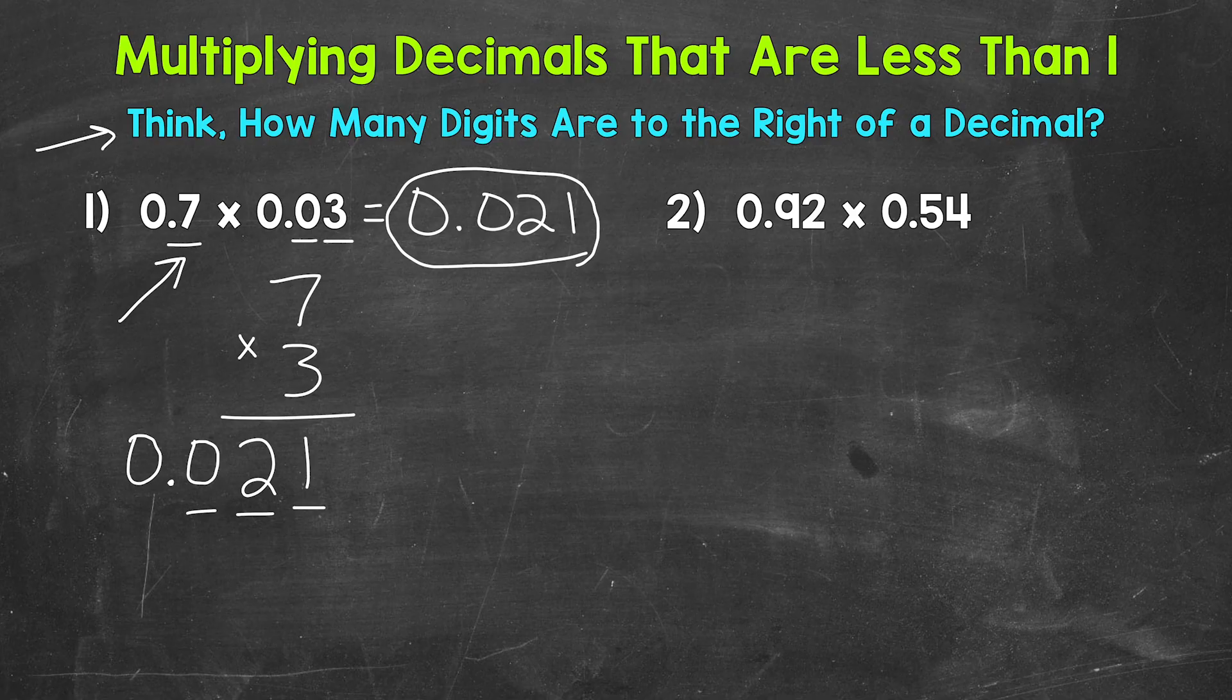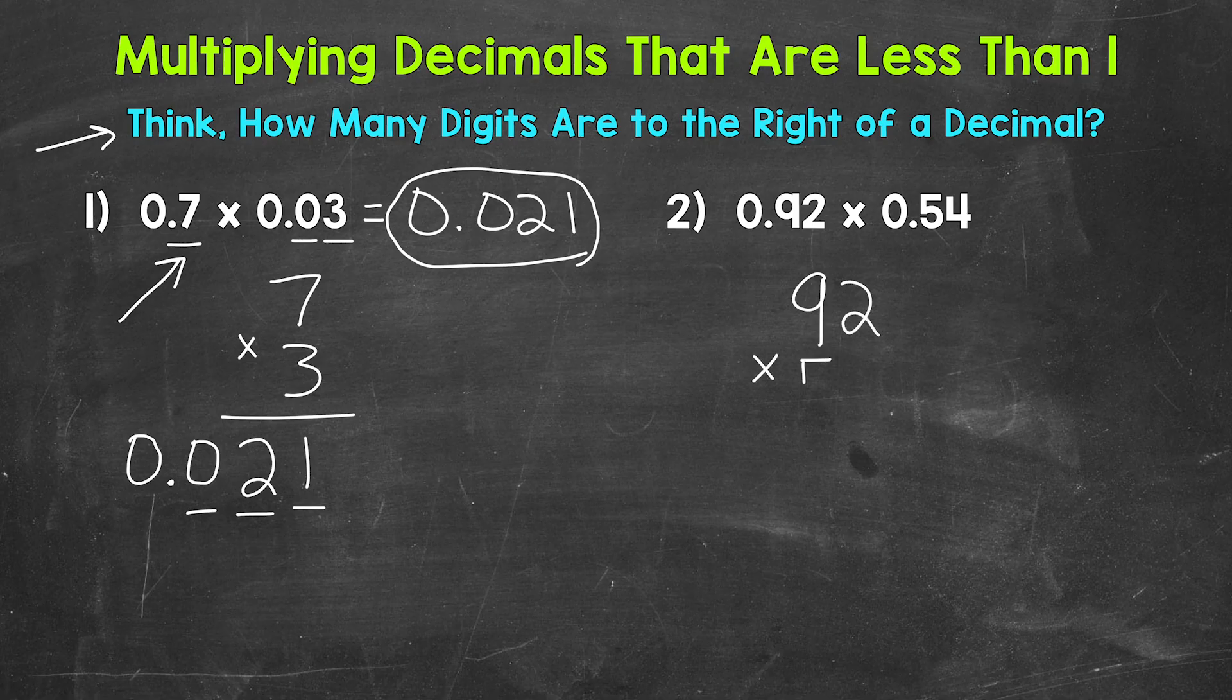3 digits behind a decimal in the original problem and 3 digits behind the decimal in our final answer. Let's move on to number 2, where we have 92 hundredths times 54 hundredths. So let's take the decimals out and rewrite this vertically.